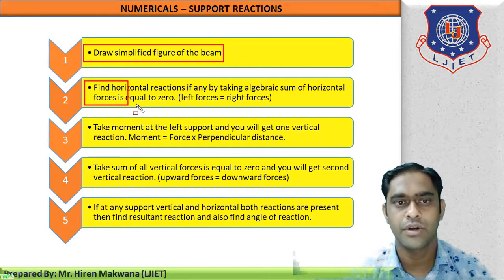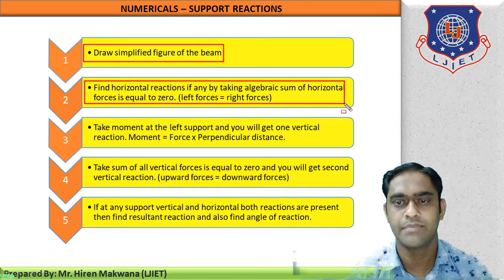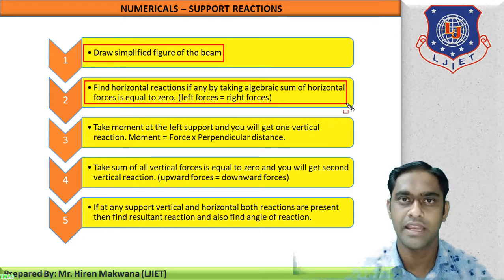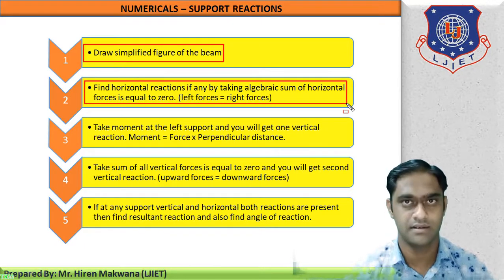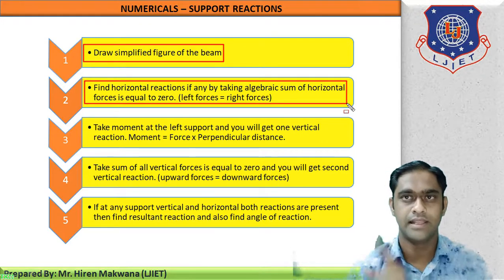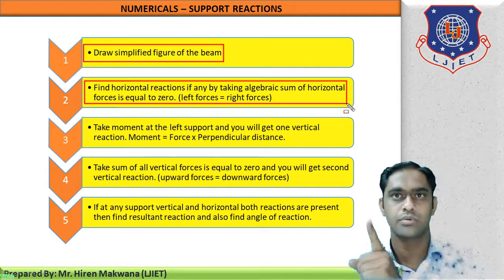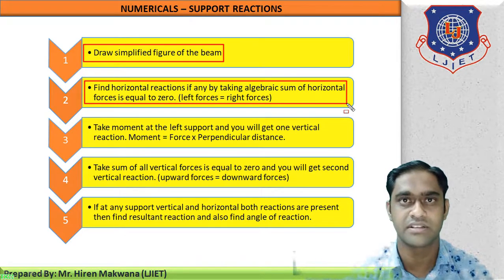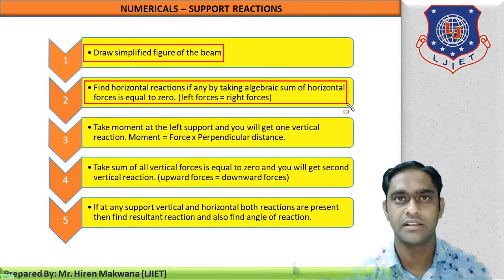Step number two: find horizontal reactions, if any, by taking the algebraic sum of horizontal forces equal to zero. In the simplified figure, if there are any horizontal forces present, take their algebraic sum equal to zero — meaning left side forces equal right side forces. By equating them, you will get the unknown horizontal reactions.